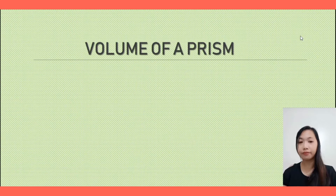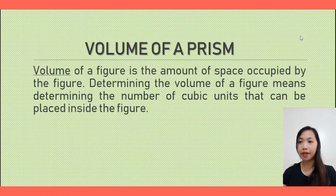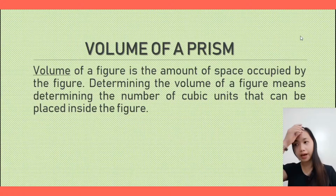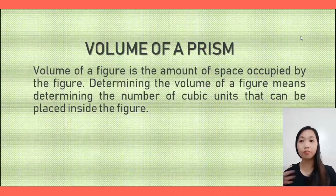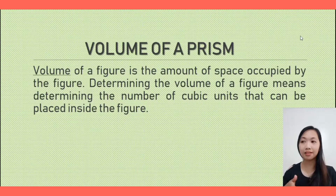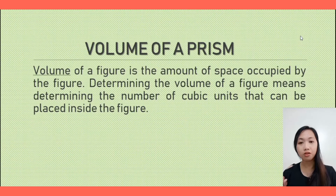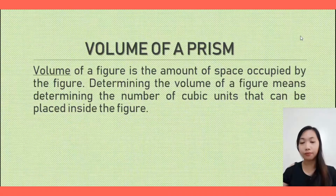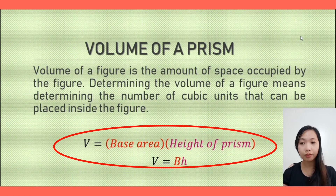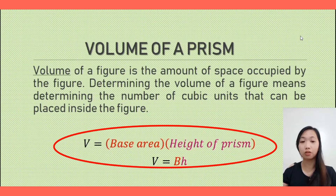Next, we have the volume of a prism. The volume is the amount of space occupied by the figure. Determining the volume means determining the number of cubic units that can be placed inside the figure. If area is measured in square units, volume is measured in cubic units. The volume is equal to the base area multiplied by the height of the prism, or V = Bh.